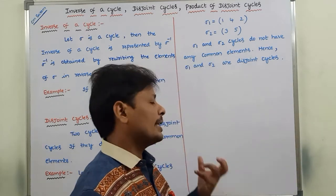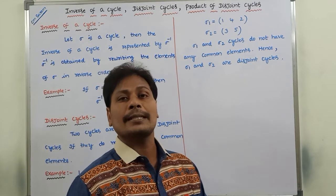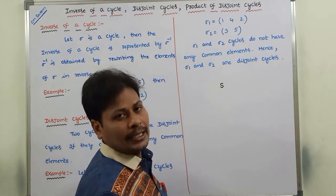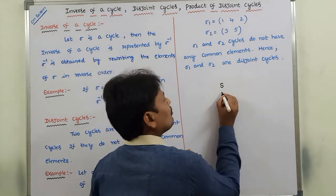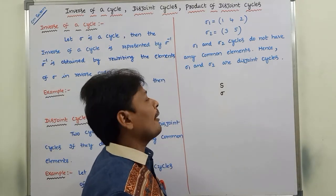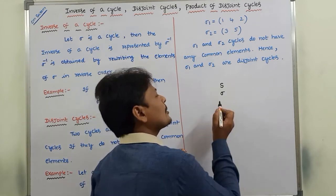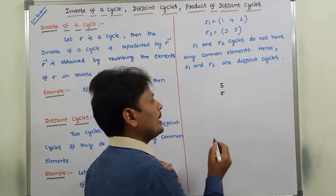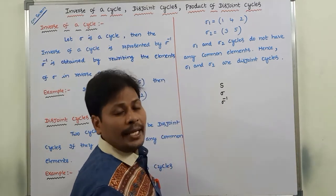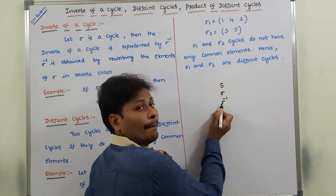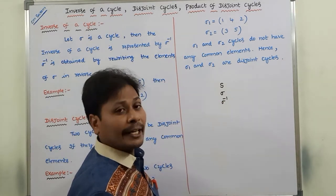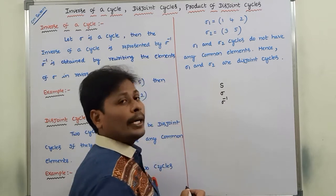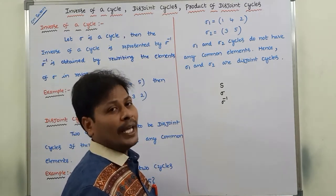Now we can go for what is inverse of a cycle or what is inverse of a cyclic permutation with one example problem. Let capital S be a finite set that contains a finite number of elements. Sigma is a cyclic permutation defined on the elements of set S. Then the inverse of sigma, denoted by sigma inverse, is obtained by rewriting the elements of sigma in reverse order. Sigma inverse is called the inverse of a cycle or inverse of a cyclic permutation.